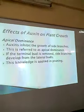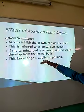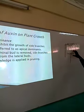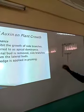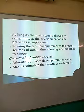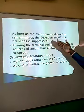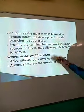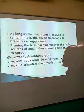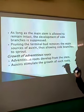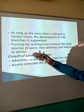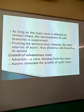This is an activity that has been employed in pruning. When the side branches grow, we are going to have a high yield of the crops. As long as the main stem is allowed to grow or remain intact, the development of side branches is suppressed by the high concentration of auxins found at the apex. Pruning of the terminal bud removes the main source of auxin, thus allowing side branches to sprout.